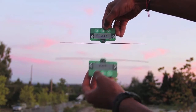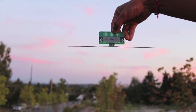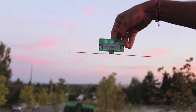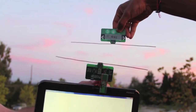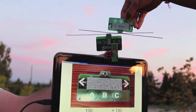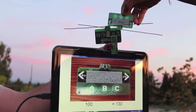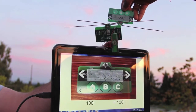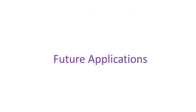Now we use the payment terminal to check the new balance on card 100. It has increased to 130. This is just one example of what we can enable by using existing wireless signals as both a source of power and a communication medium.